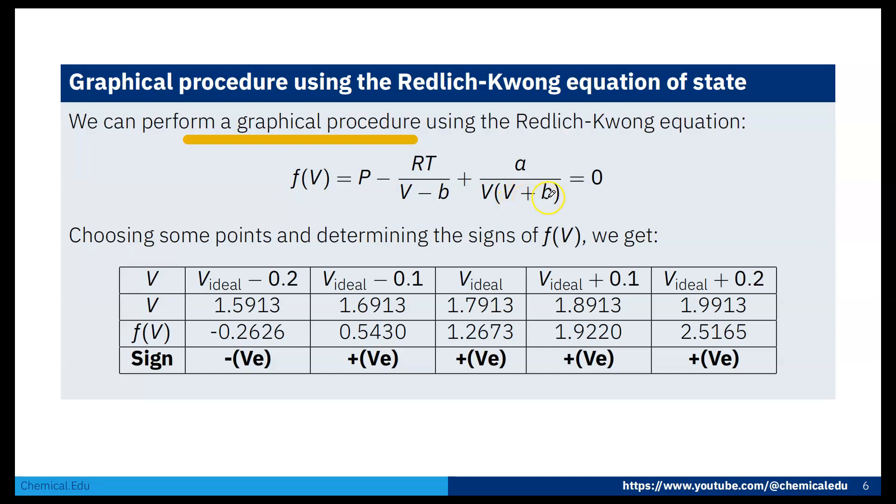Here, all are known except V. We need to find V such that f of V equals 0. If we put all these values in the equation, when f of V equals 0, that will be our molar volume.